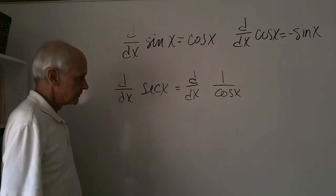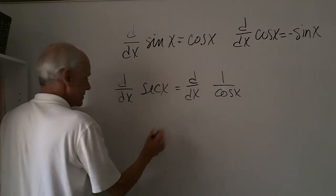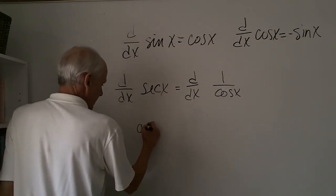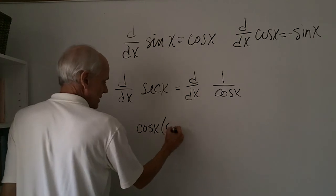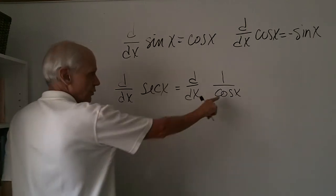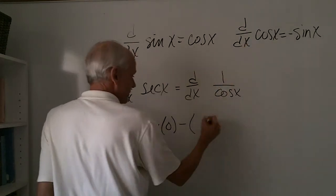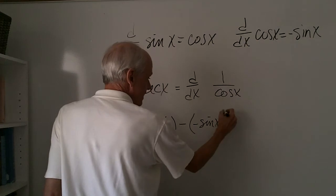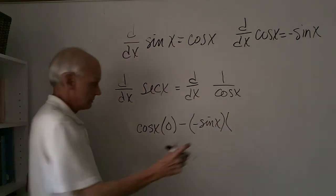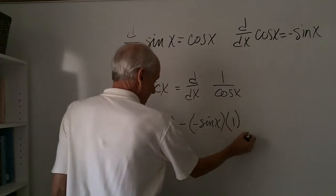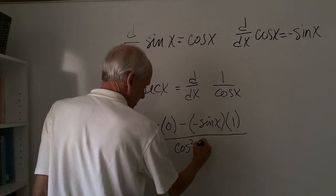Using the quotient rule, we're going to take the derivative of the numerator times the denominator, so that's going to be the denominator is cosine x, the derivative of the numerator is zero, minus the derivative of the denominator, which is negative sine x, times the numerator. This is just the quotient rule, right? Right. And that's all going to be over the denominator squared. Just the quotient rule.